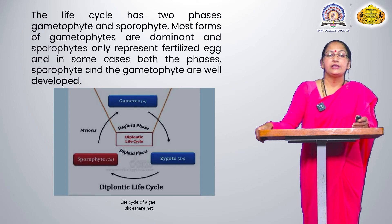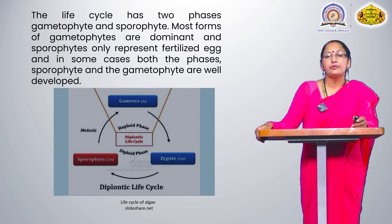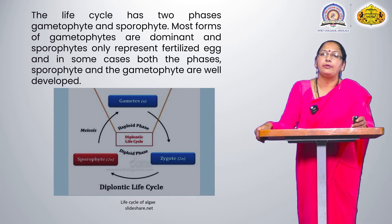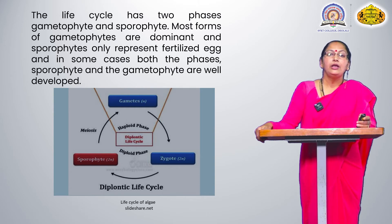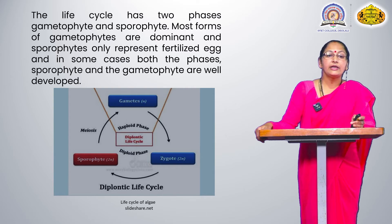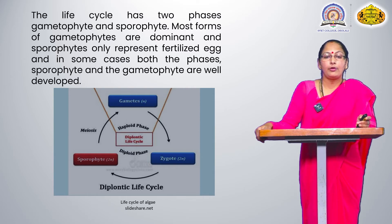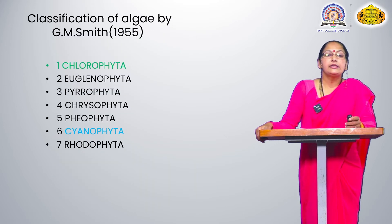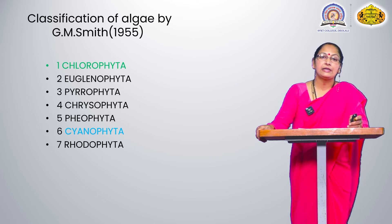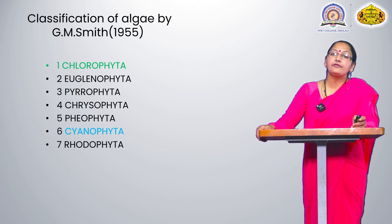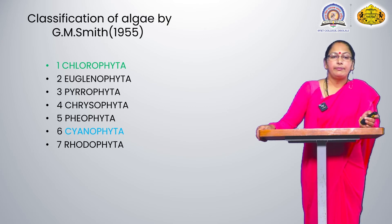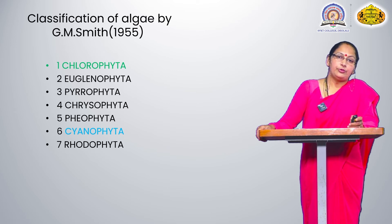The life cycle has two phases: gametophytic and sporophytic. Most forms have a dominant gametophytic phase, and the sporophytic phase represents only the fertilized egg. In some cases, both sporophytic and gametophytic phases are well developed. These all characters were seen in the last lecture but are revised today.